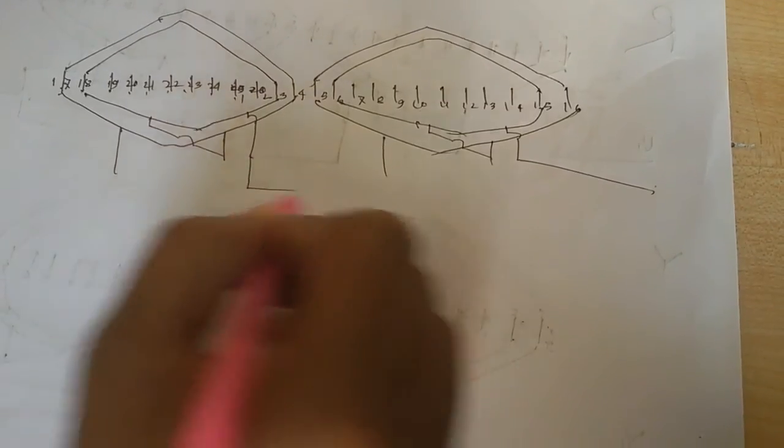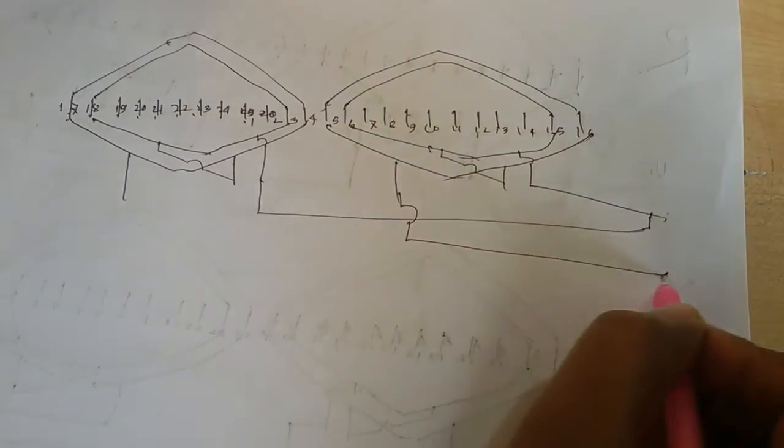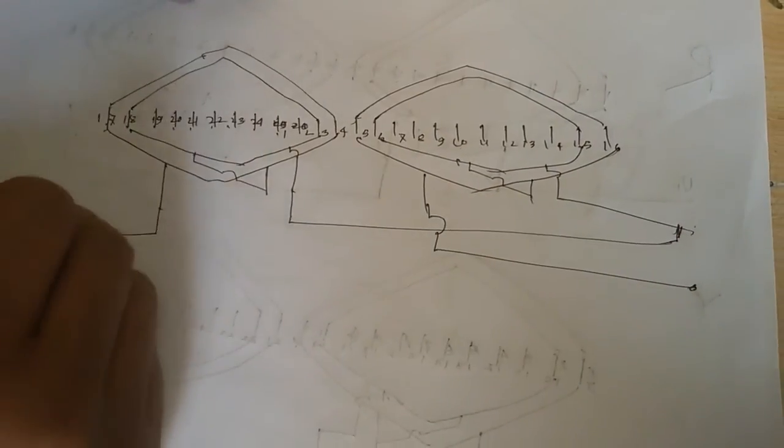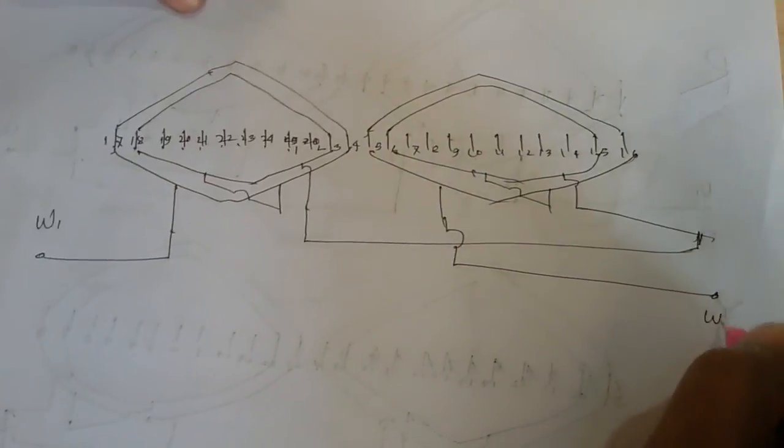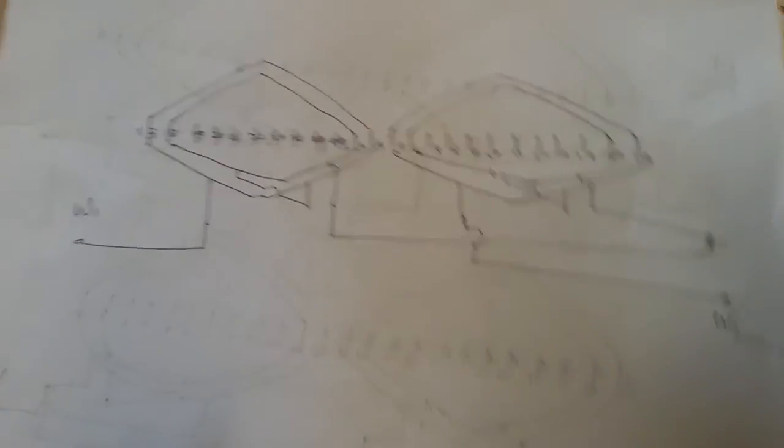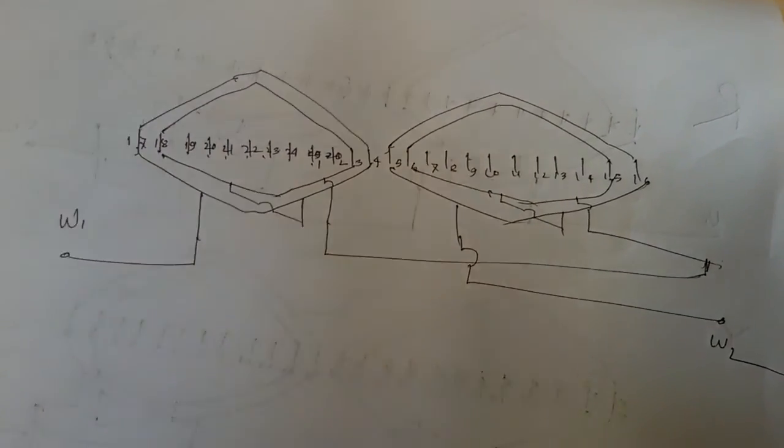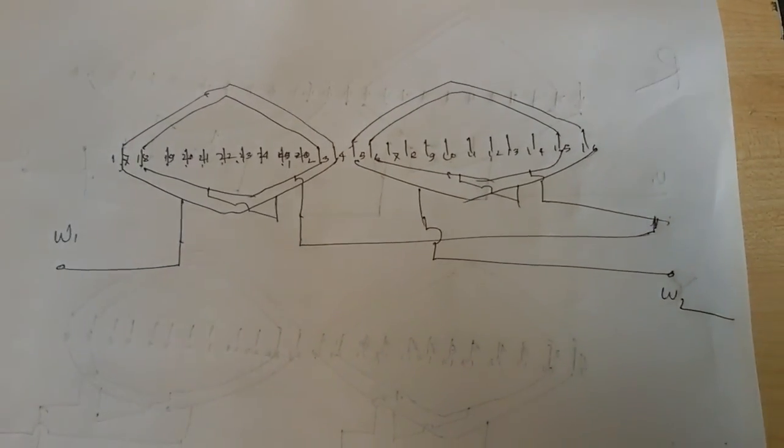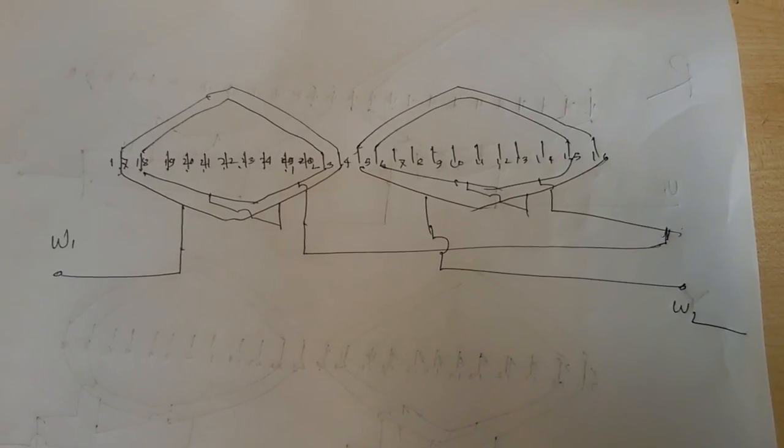This coil to connect this way and this terminal. There is W1 and this is W2. We get here 6 terminal. If you want to need 3 terminal then you short here, all coil 2 side or 1 side.